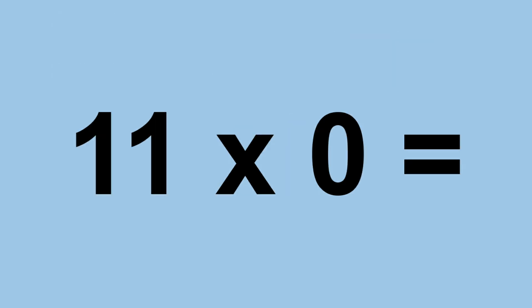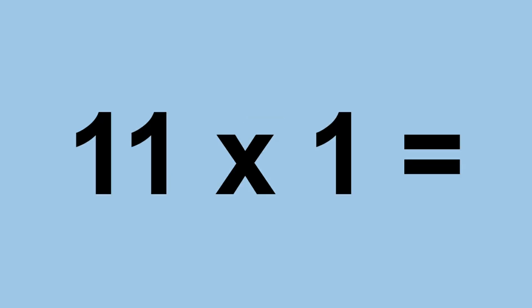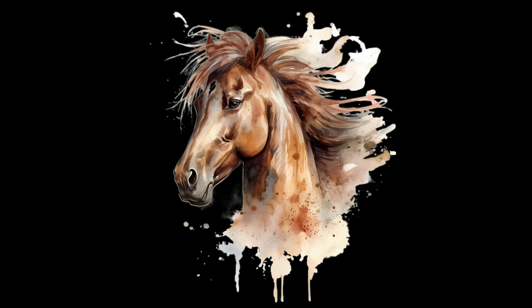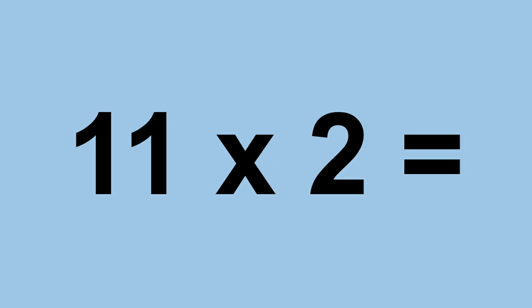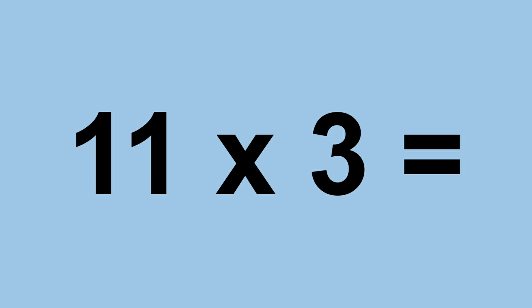Eleven times zero equals zero. Eleven times one equals eleven. Eleven times two equals twenty-two. Eleven times three equals thirty-three.